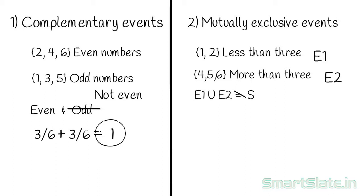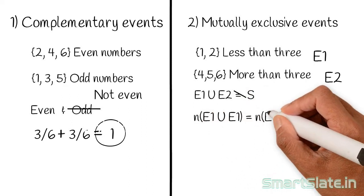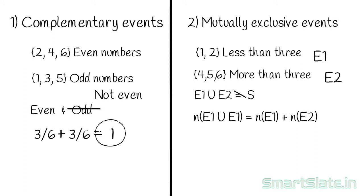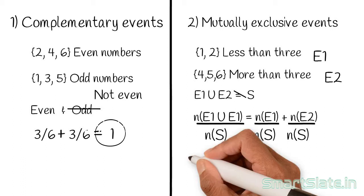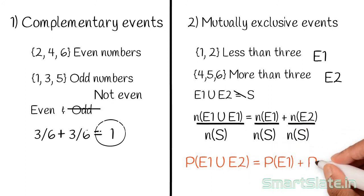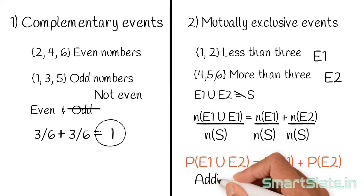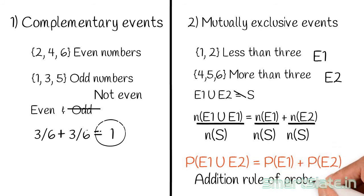Two or more events are said to be mutually exclusive if the occurrence of one event prevents or excludes the occurrence of the other. Since mutually exclusive events have no common outcomes, the total number of favorable outcomes can be obtained by adding the individual counts. Dividing both sides by the sample space size, we get the addition rule: the probability of either mutually exclusive event occurring equals the sum of their individual probabilities. This rule can be extended to more than two mutually exclusive events.